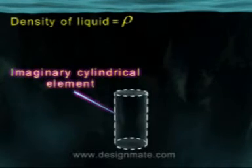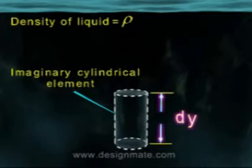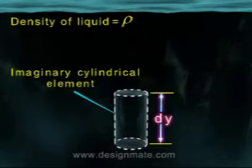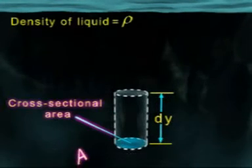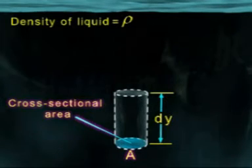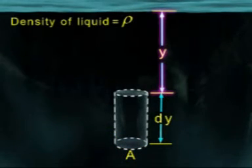Let us select an imaginary cylindrical volume element of height dy and cross-sectional area A at a depth y from the surface of the liquid.